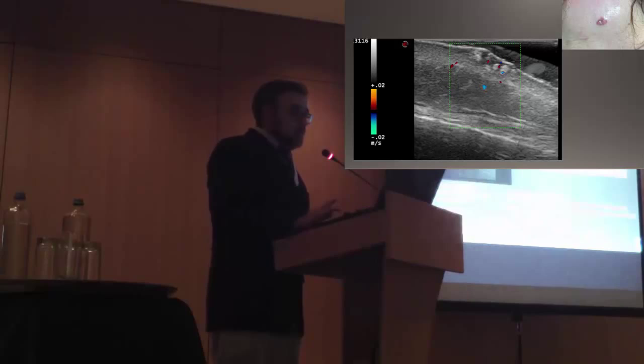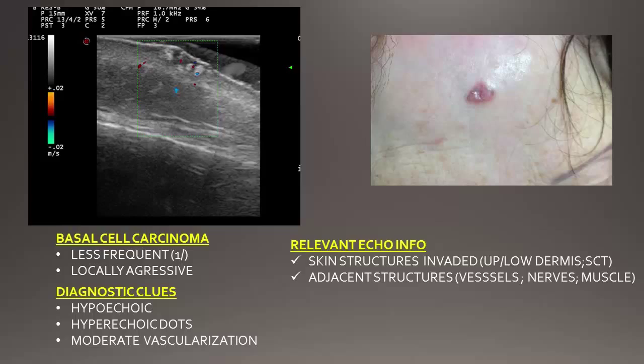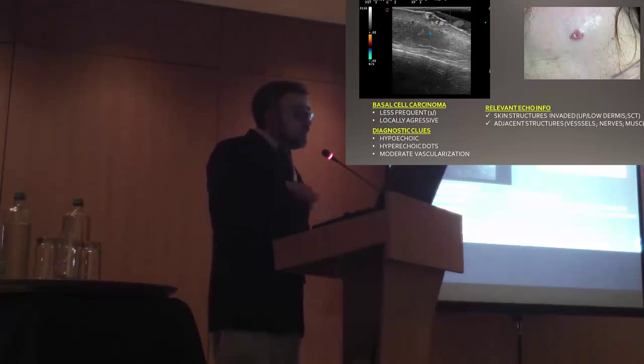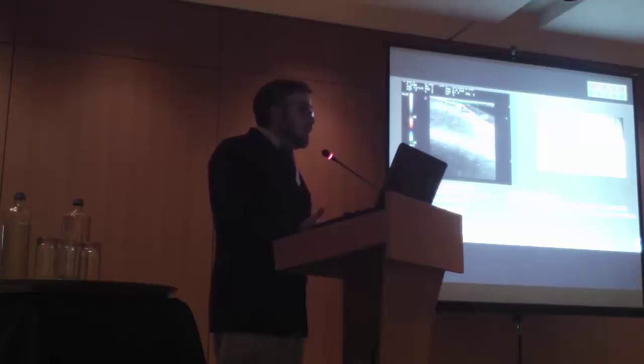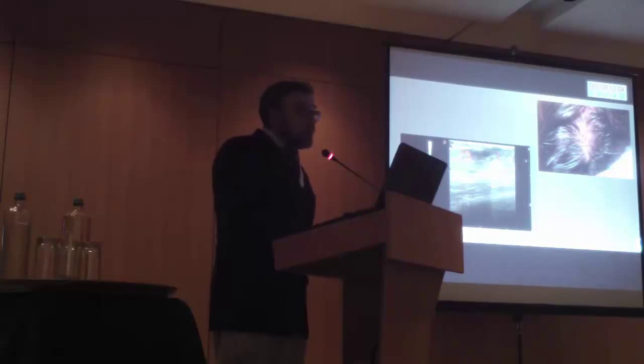Another classical tumor, which is the most frequent, is basal cell carcinoma. This is also a malignant tumor, but it has the advantage — or the inconvenience — that it rarely has metastasis. It's very frequent; one out of five people in this room will have basal cell carcinoma. For the clinician treating you, it would be very nice to have information about which skin structures have been invaded: dermis, epidermis, subdermal tissue, and which structures are nearby in case an operation has to be carried out.